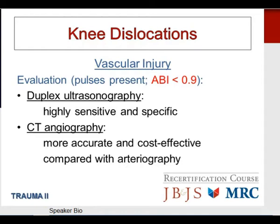For treatment of knee dislocations, the issue of repair of the multiligamentous injury acutely or subacutely remains somewhat controversial. Typically the ACL, PCL, and posterolateral corner are repaired, and the medial collateral ligament injury is treated nonoperatively. The most common sequelae of these dislocations is significant knee stiffness.